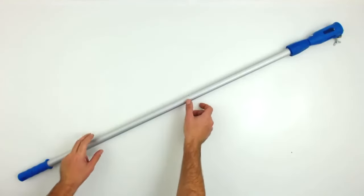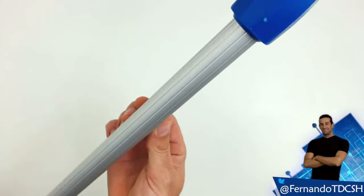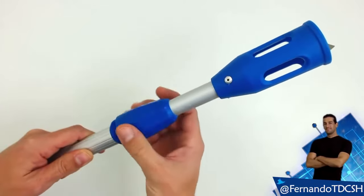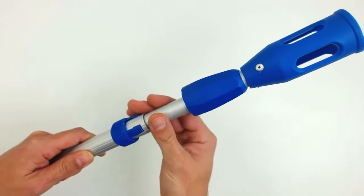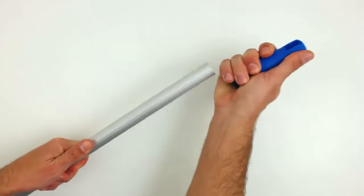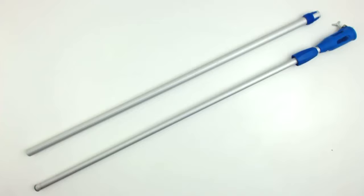We start by taking an extendable stick of this type. We will take advantage of the resemblance of the exterior and interior tube. We are now going to take it apart. We will also remove the remaining plastic parts. With this done, we already have two clean tubes to start cutting.